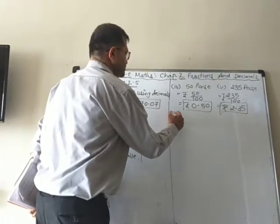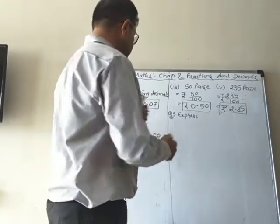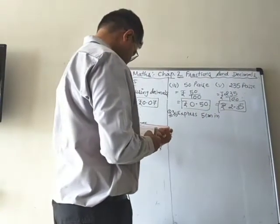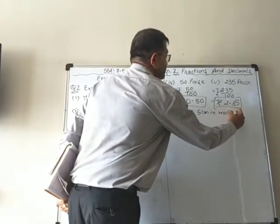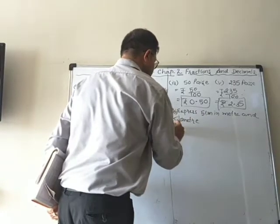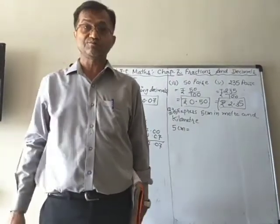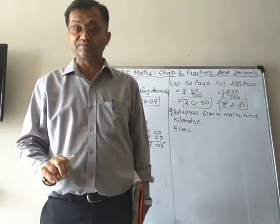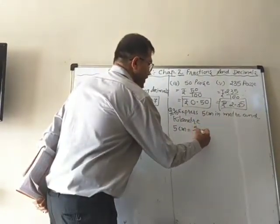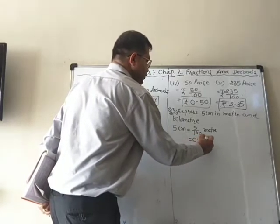Now question 3 says express 5 centimeters in meter and kilometer. We must know the relation between meter and centimeter: 1 meter is 100 centimeters. Same as rupees and paise, we divide by 100. So 5 upon 100 meter equals 0.05 meter.